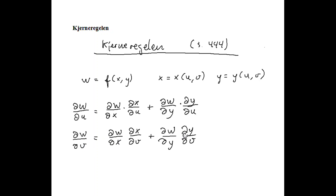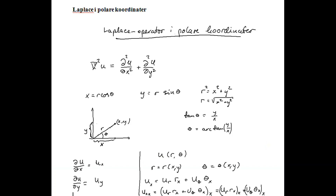This chain rule is important for understanding the Laplacian in polar coordinates. The Laplace equation is when the second partial derivative of u with respect to x plus the second derivative of u with respect to y is equal to zero. This is an important equation which we want to transform into polar coordinates. Recall that a coordinate x, y can be described in polar coordinates as x equal to r cosine theta and y equal to r multiplied with sine theta.